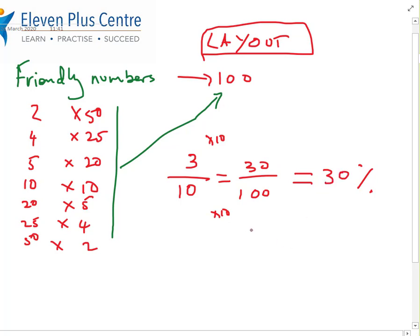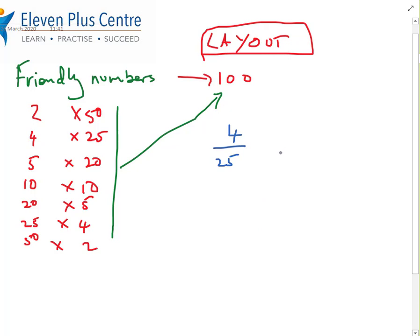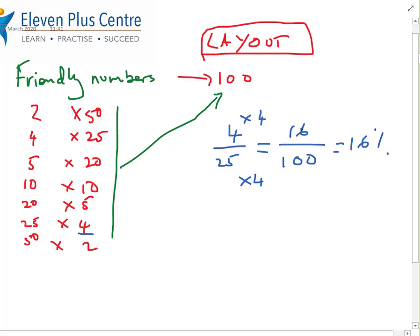Let's take a look at another example: 4 out of 25. Is 25 a friendly number? We always look at the denominator — is it a friendly number? Yes, it's on the list. We lay out like this. What number turns 25 into 100? The answer is 4 — that's my magic number. So the top number also gets multiplied by 4: 4 times 4 is 16. The answer is 16 percent. Remember, percent means out of 100.